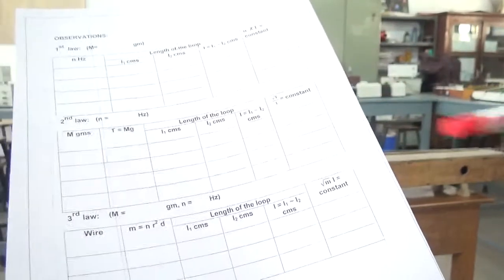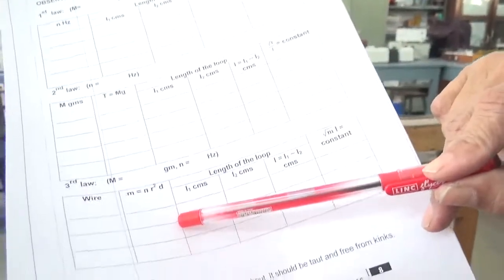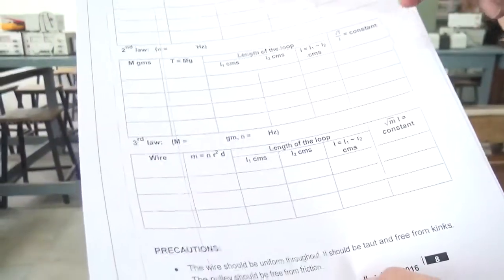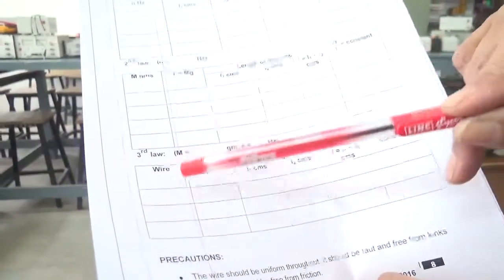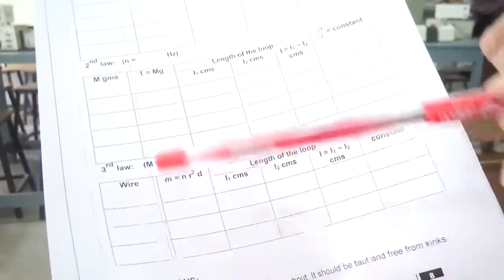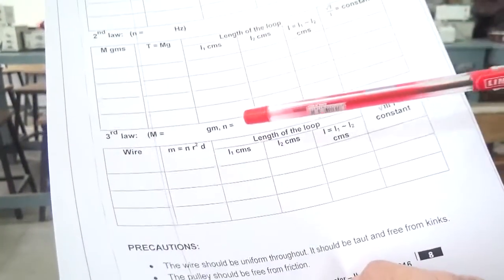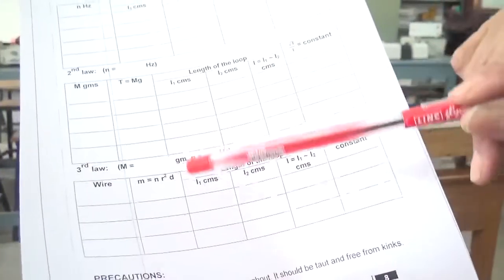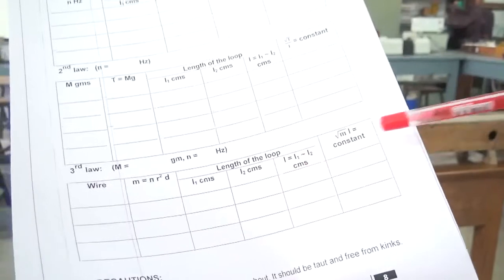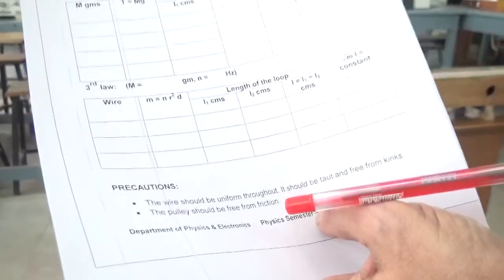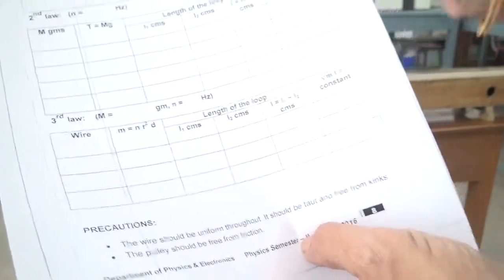The third law: same setup. Till now we used steel wire. Now you have three different wires - steel, brass, and copper. Tension is constant, frequency is also constant. Keep three wires separately and find out the resonating length and show that root μ into L is constant.